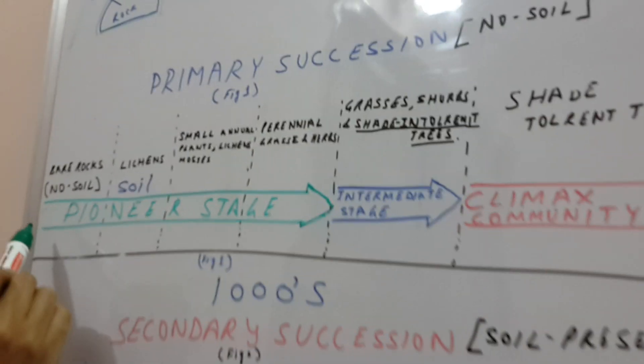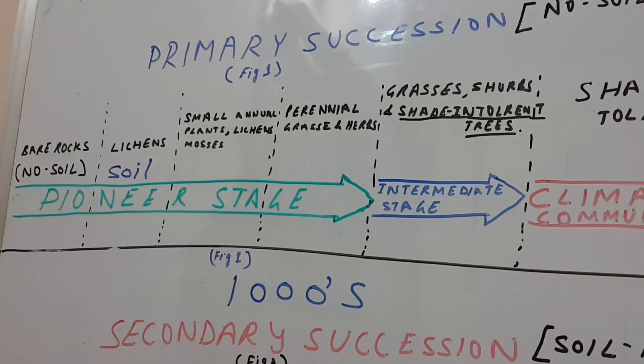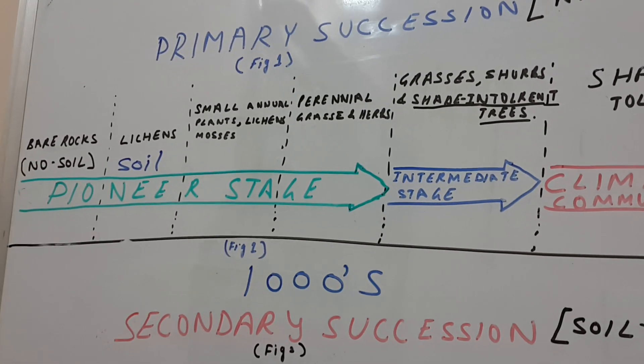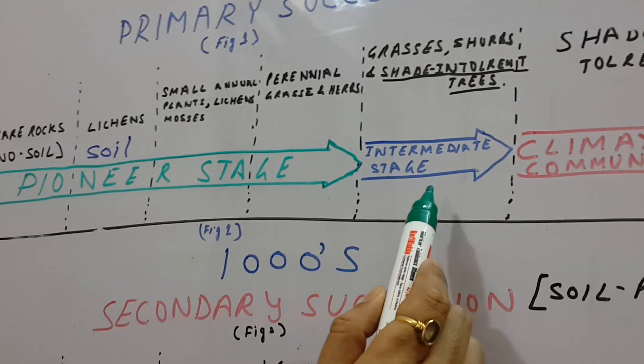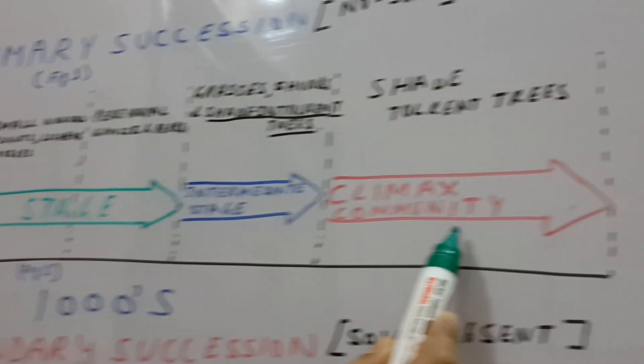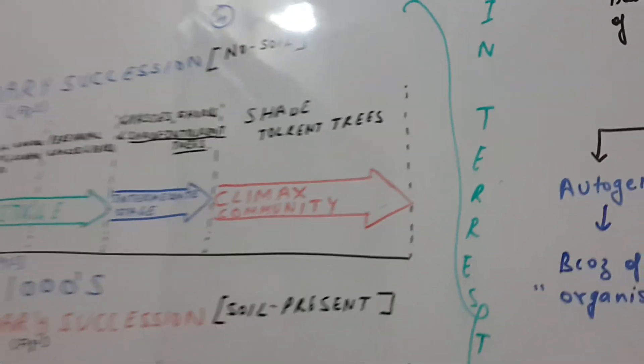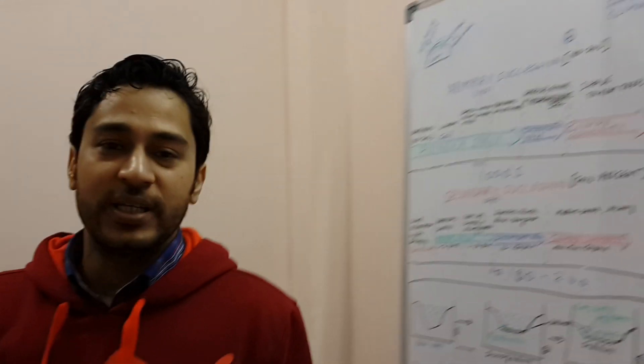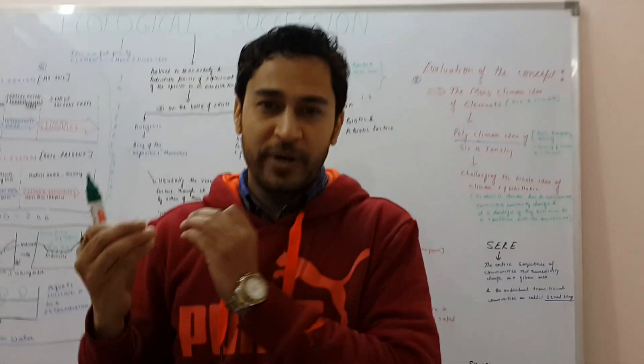So let's look at these stages. This is called the pioneer stage because of pioneer species like the lichens. Pioneer species are those which are the first to occupy a barren area. Then we have intermediate species, then we have the climax community. Climax community is a community that is in equilibrium with the environment, and I would like to elaborate a little more.